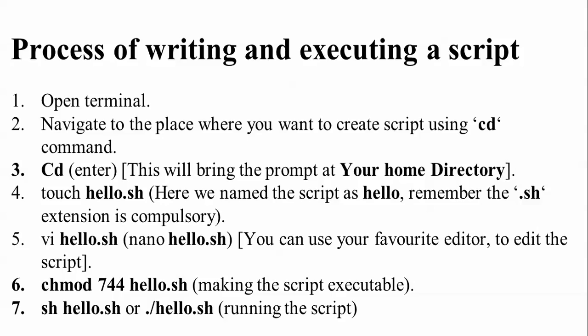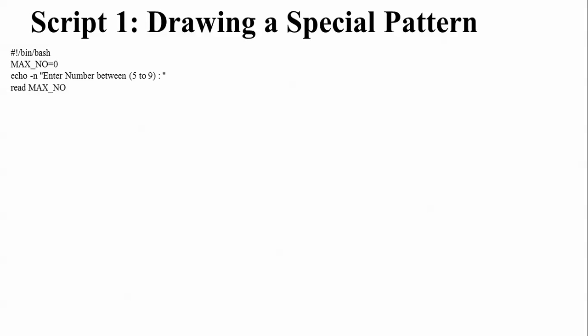Now I'm going to create the first script — drawing a special pattern. I'll show you how to draw a special pattern in a script. This uses bash, and the script will prompt for a maximum number. The user enters a number between five and nine. There's an if-else condition to validate the input, and you can set any number from five to nine as you wish.